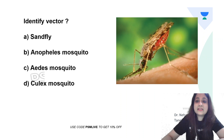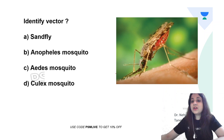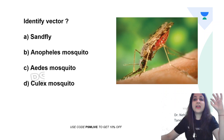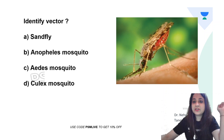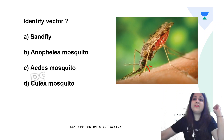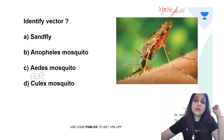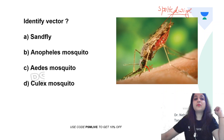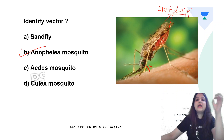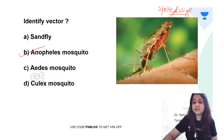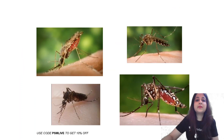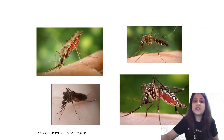Next image: is it Sandfly, Anopheles, Aedes, or Culex? Identification of adult mosquitoes is very important. This mosquito is sitting at an angle of 45 degrees and has spotted wings. Sitting at 45 degrees with spotted wings is a feature of the Anopheles mosquito.